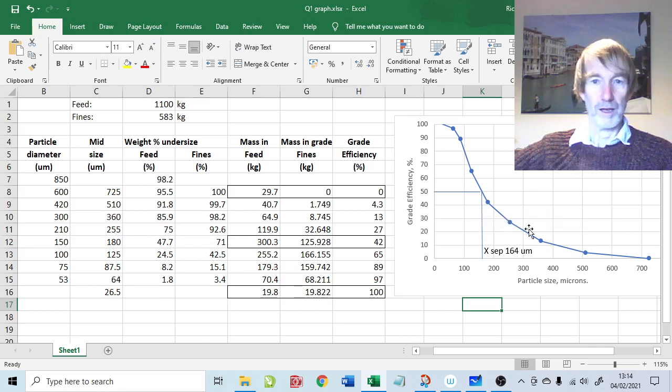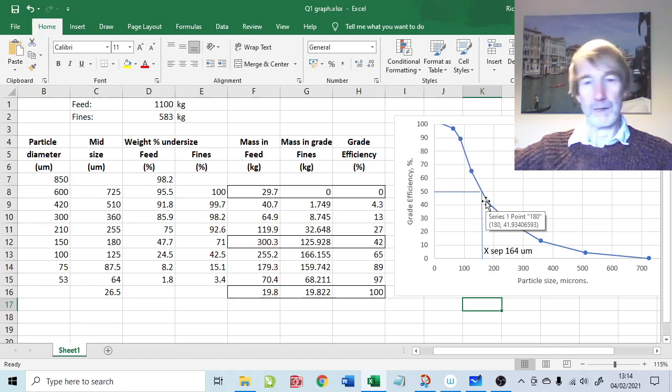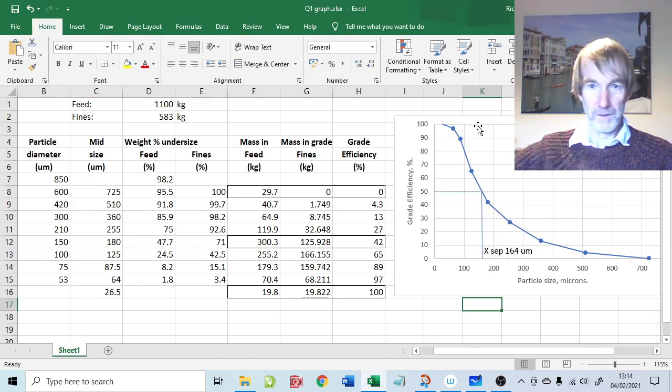Any coarser than 164 there's a tendency for it to go into the coarse cut. Any finer than 164 there's a tendency for it to go into the fine cut. If you're looking for a single value to describe the classifier, it's the separation size which is 164. But by no means is it a step function where everything less than 164 goes into the fine cut and everything greater than 164 goes into the coarse cut. It's not a step function, it's this smooth curve here where we can say there's everything in the fine cut less than 53 microns.